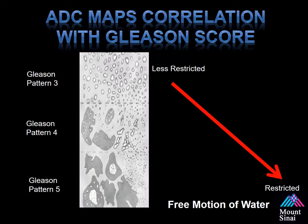This is a simple example. Looking at Gleason Pattern 3, which represents almost normal cellular architecture within the prostate except for staining on the basement membrane, it is not as restricted as if you move through Gleason 4 and up to Gleason 5, which becomes more restricted, equating with lower ADC values.